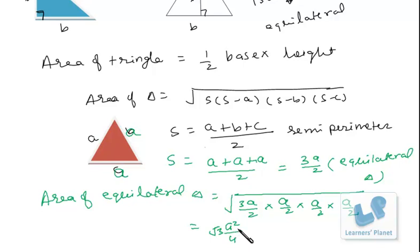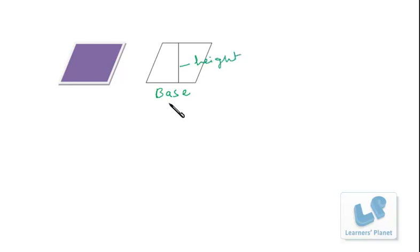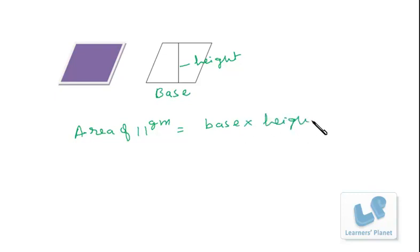Now let's discuss the area of a parallelogram. Here we see a parallelogram. The area of the parallelogram is base into height. This is the base of the parallelogram and this is the height of the parallelogram. So area of parallelogram = base × height. If I say this is P (base) and this is H (height), so it will be P into H. You can directly use the formula whenever required.